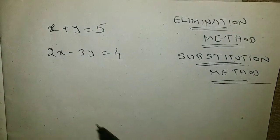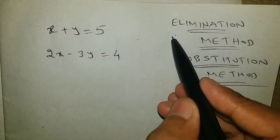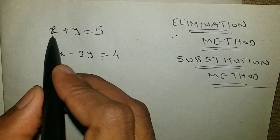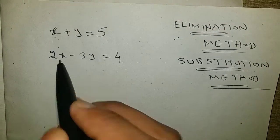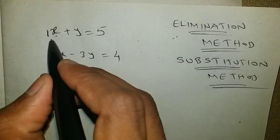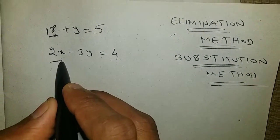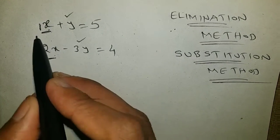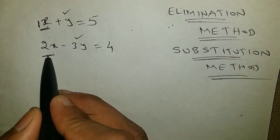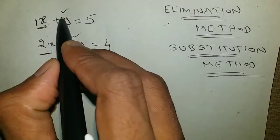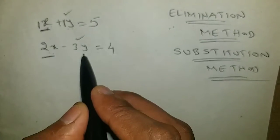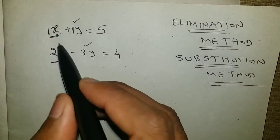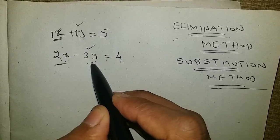First let us discuss the elimination method. In the elimination method, the coefficient of x or the coefficient of y should be the same. Here the x coefficient is 1, and here the x coefficient is 2 — they are different. The y coefficient is 1 in the first equation, and the y coefficient is minus 3 in the second. So our first duty is making the x coefficients or the y coefficients the same.